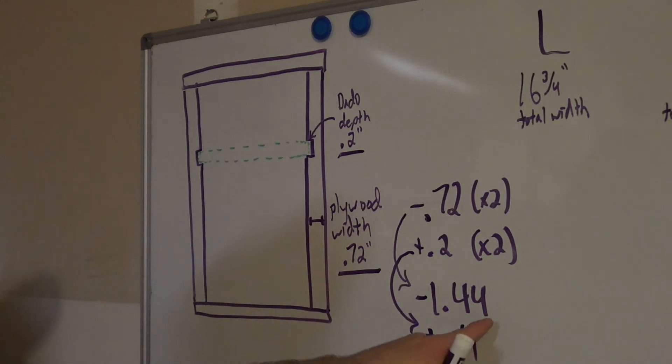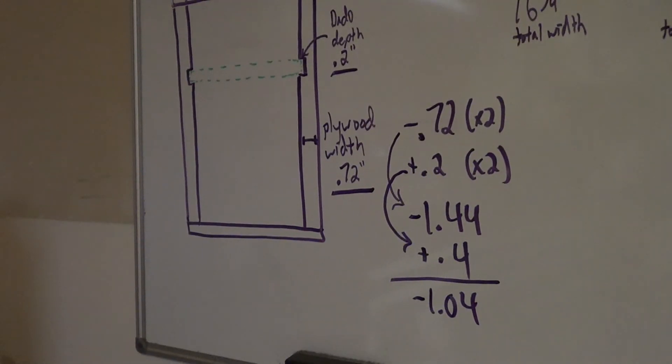So, instead of taking that total width, subtracting 1.44, and then adding 0.4, I'm going to go ahead and figure out what that total is. So, if I do subtract 1.44 and add 0.4, that gives me a total number of subtracting 1.04 from that total width. So 1.04, subtracting that from the total width.